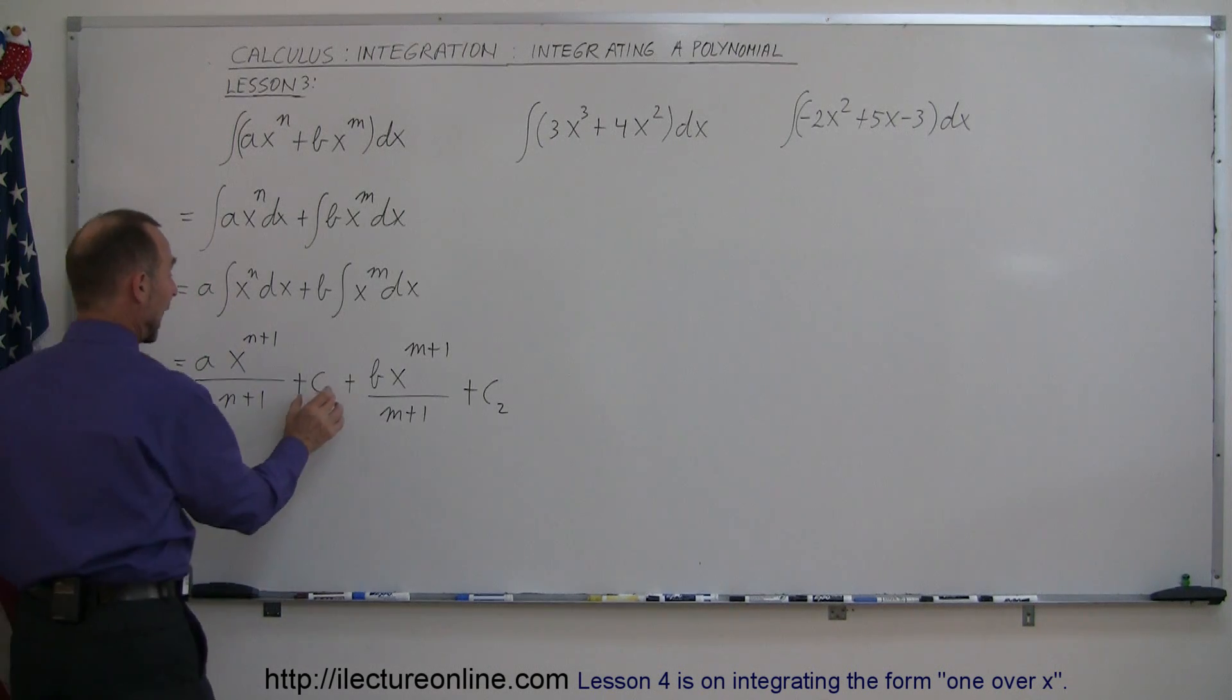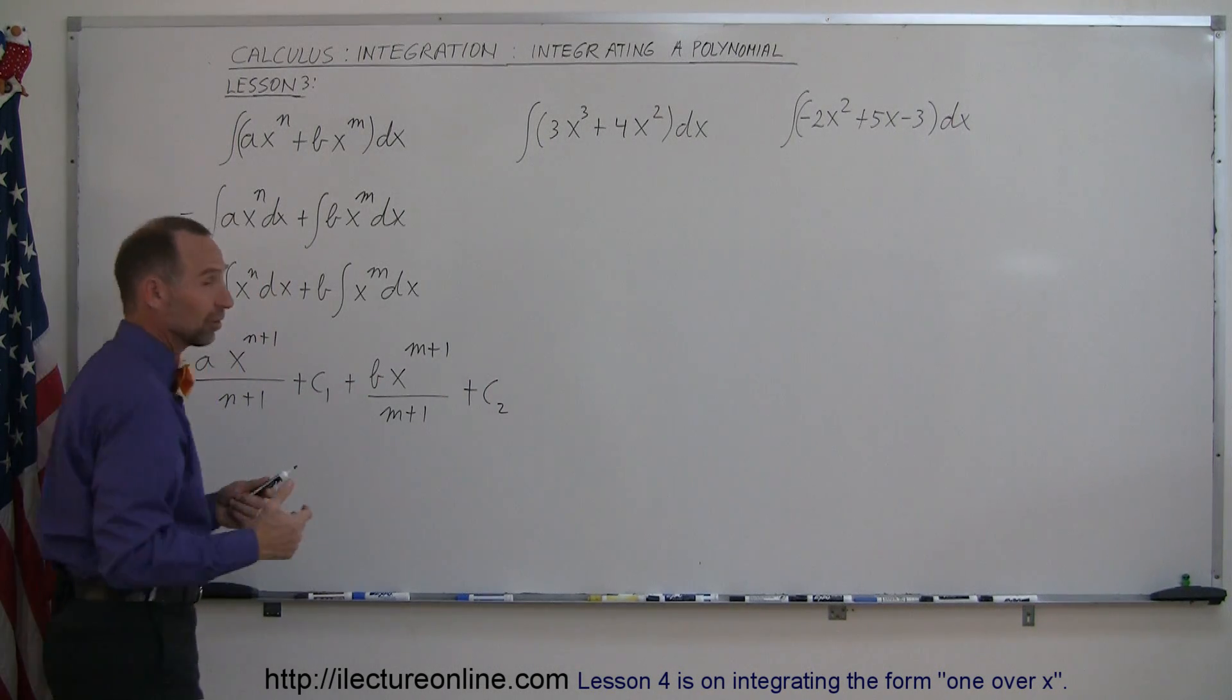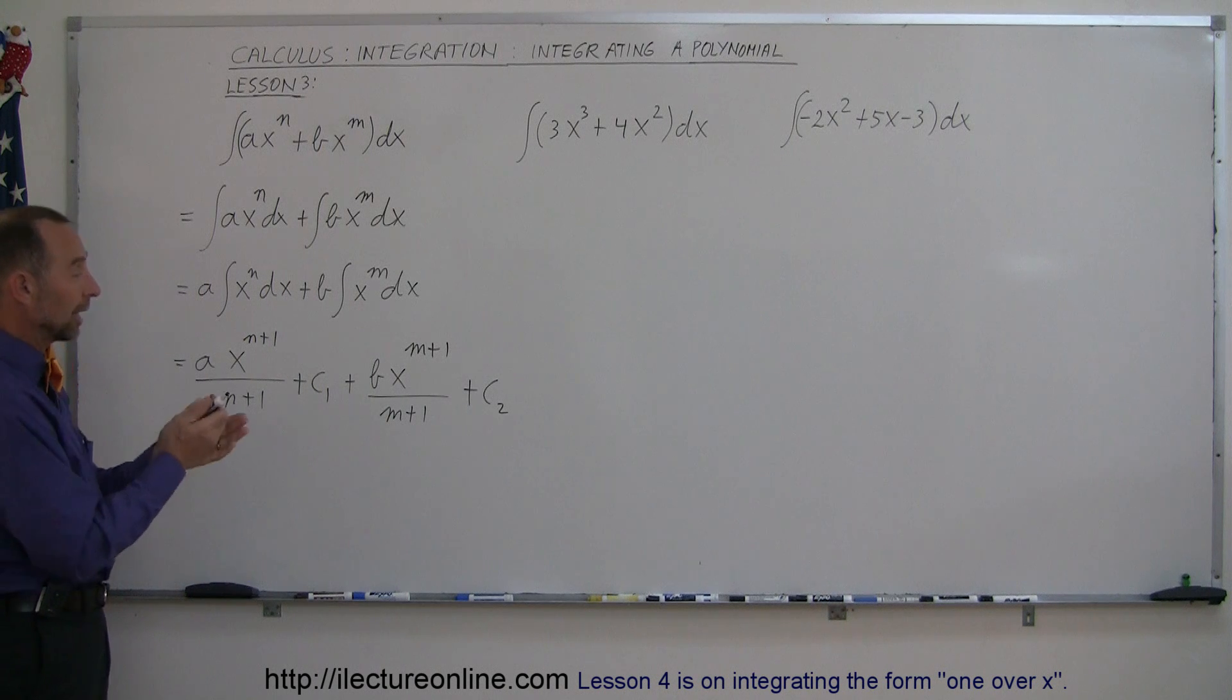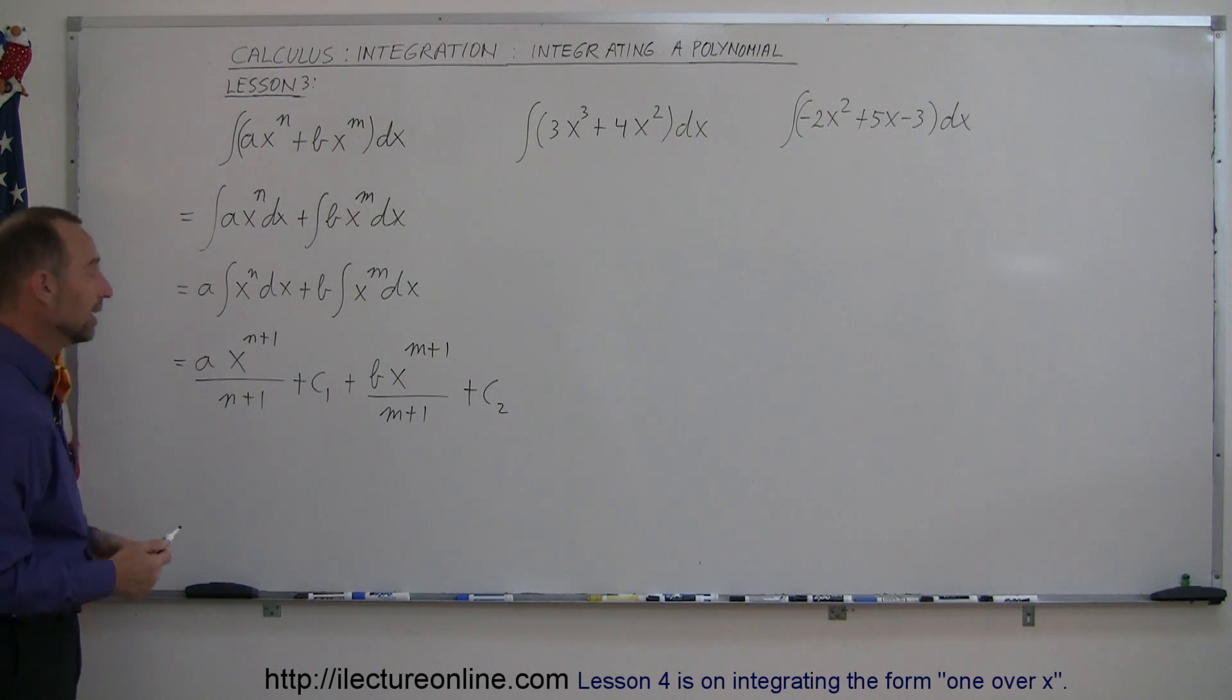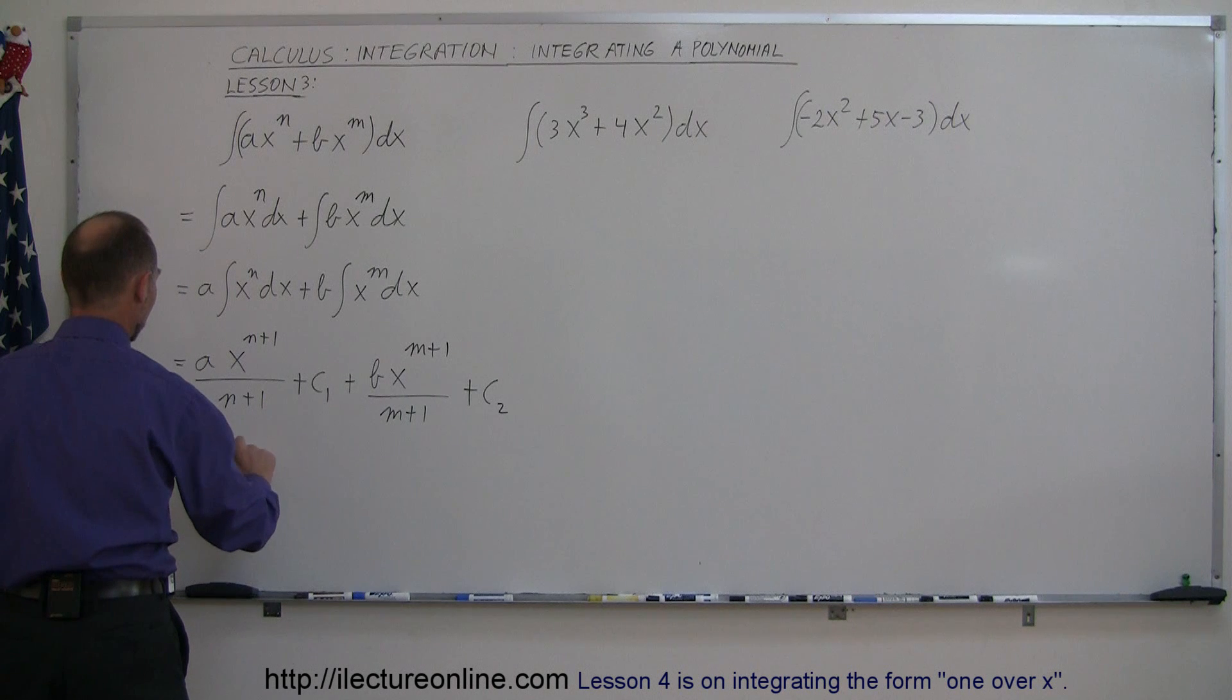Then you can add c1 and c2 together, because they're just arbitrary constants. Add them together and simply say there's a constant at the end. So we can write this as a times x to the n